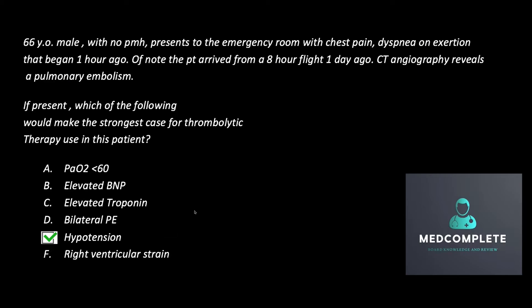Submassive and massive pulmonary embolism become a little bit trickier. Massive PE is somebody who has a PE with hemodynamic instability, specifically hypotension. This is someone where the pulmonary embolism has caused significant hemodynamic compromise, and the treatment for these patients is oftentimes systemic TPA. If systemic TPA is not adequate or is contraindicated, then surgical thrombectomy would be the next step, but that is oftentimes risky and the patient has a very high mortality rate with it.